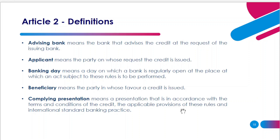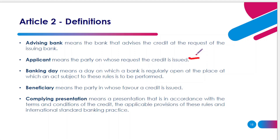Next, we have Applicant. The applicant is the initiator of the entire letter of credit — the first person who makes the request to issue it. This applicant is actually the importer in the transaction because they need to bring down the goods. To bring down the goods, they need to open a letter of credit, making them the initiation point to create it.